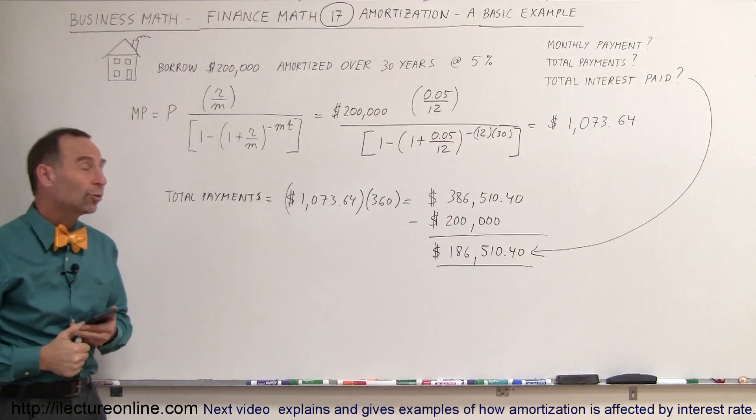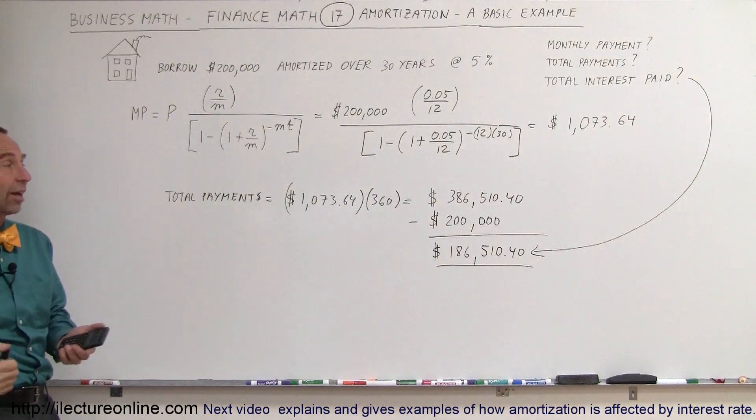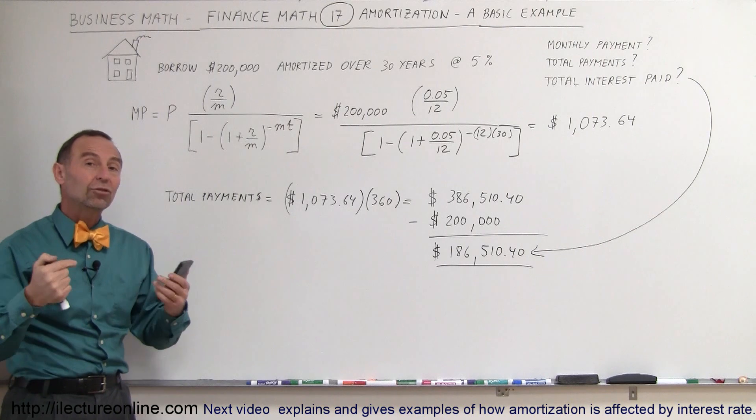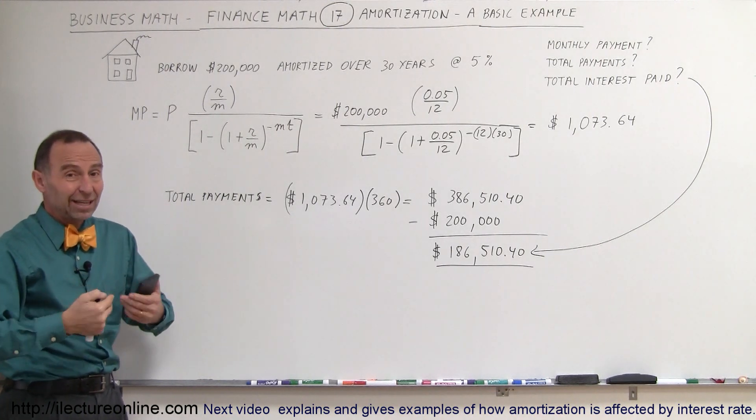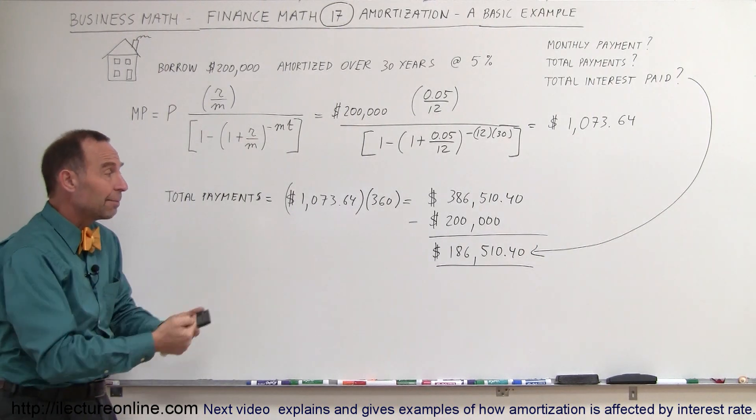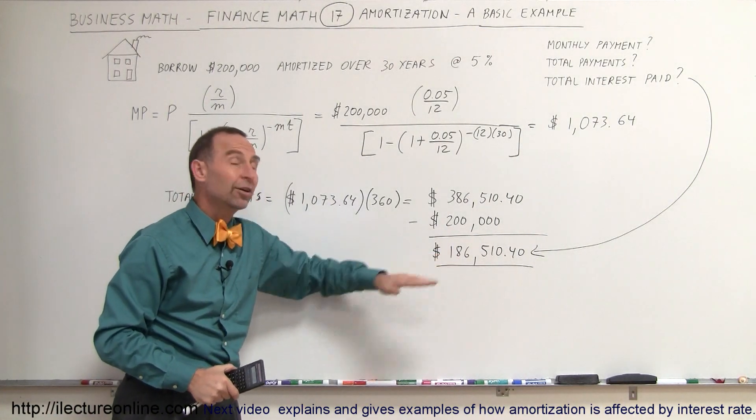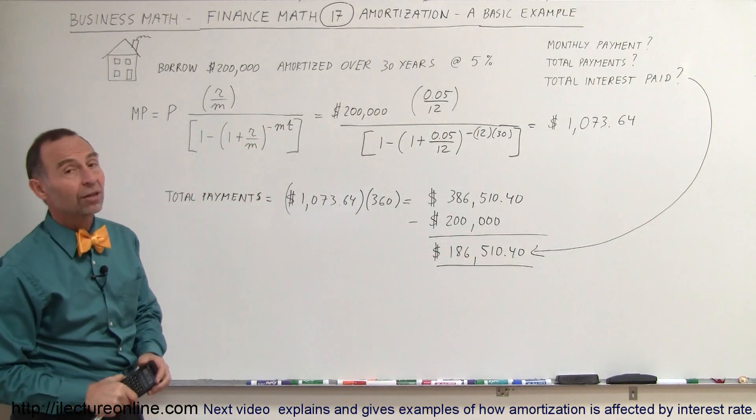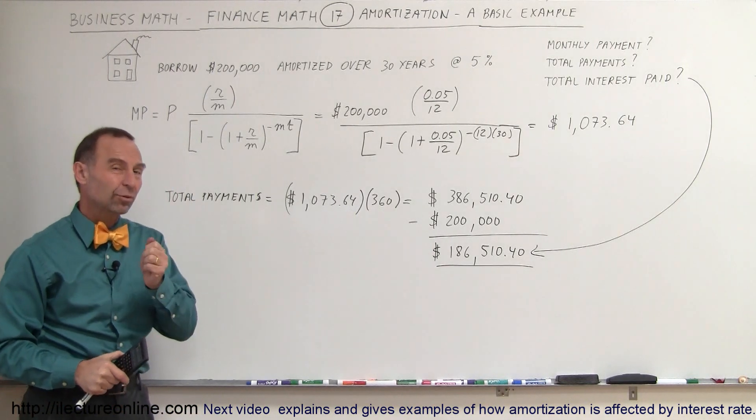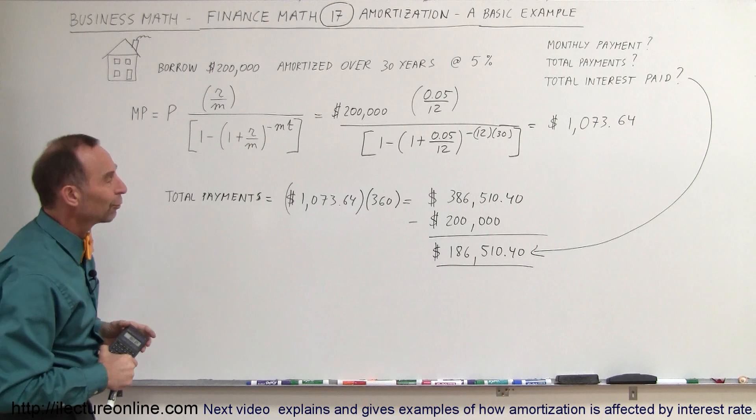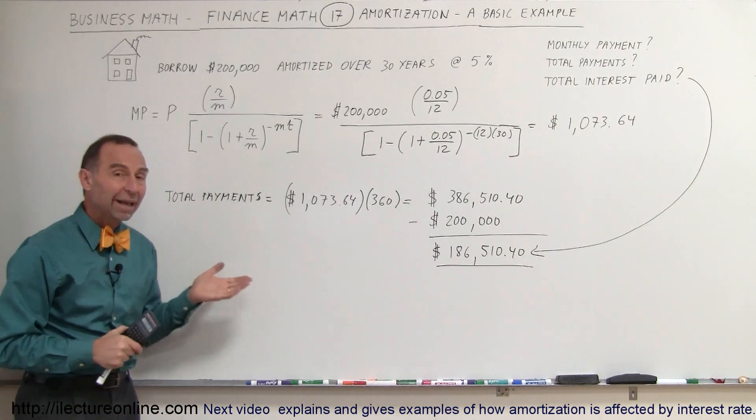So, at the end of 30 years, you will have paid back to the bank $386,510. $200,000 of that is to yourself, because it's basically the money that you borrow, so you pay that back. And the remainder, that's what the bank makes from that loan, $186,510, is the money paid back to the bank in terms of interest, and that's what they earn to lend you the money for the house. And that's what we call basic amortization.